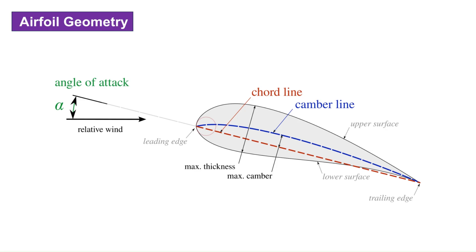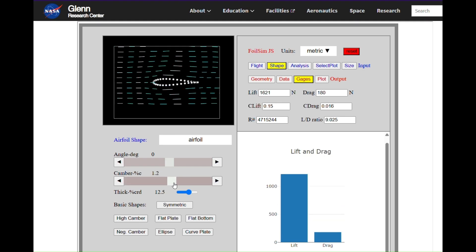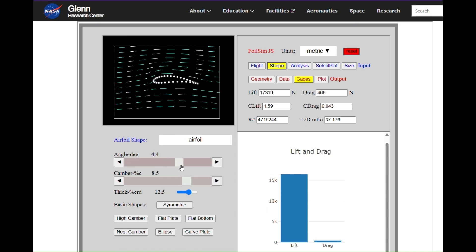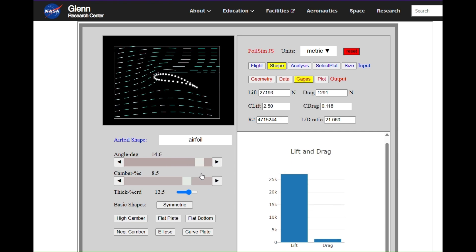Before talking about the aerodynamic behavior of airfoils, we need to understand its geometry. Different parameters of the airfoil geometry affect its various aerodynamic and structural properties. Let's look at these geometry parameters one by one.